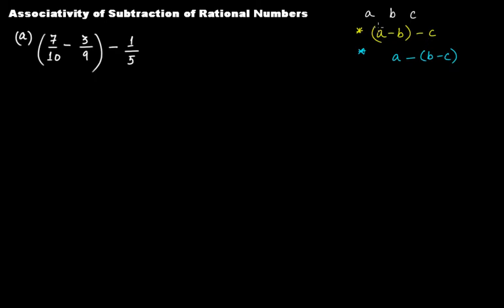Can you see the difference? The first case is (a minus b) minus c. The second case is a minus (b minus c) — first you perform b minus c then subtract from a. If these two cases are equal, we say that subtraction is associative for rational numbers. If not, then it is not associative.